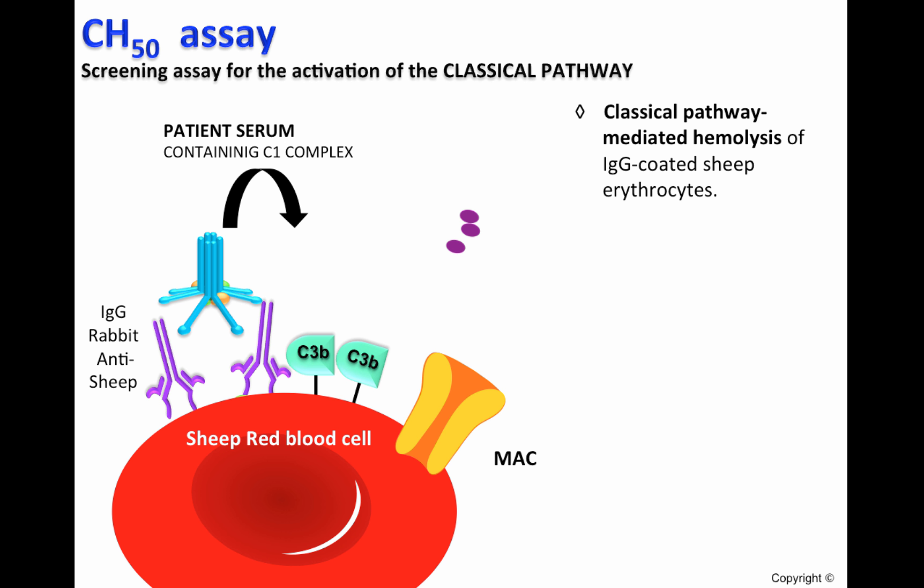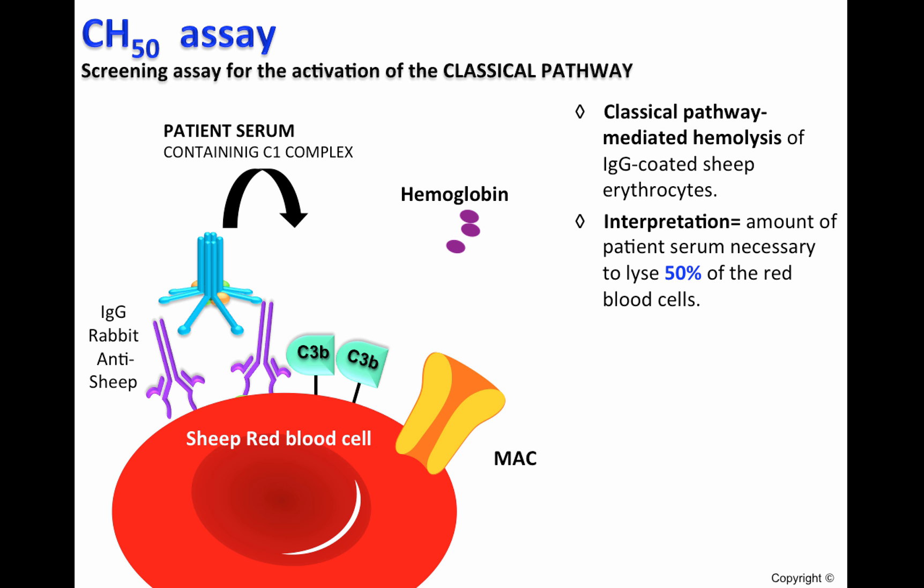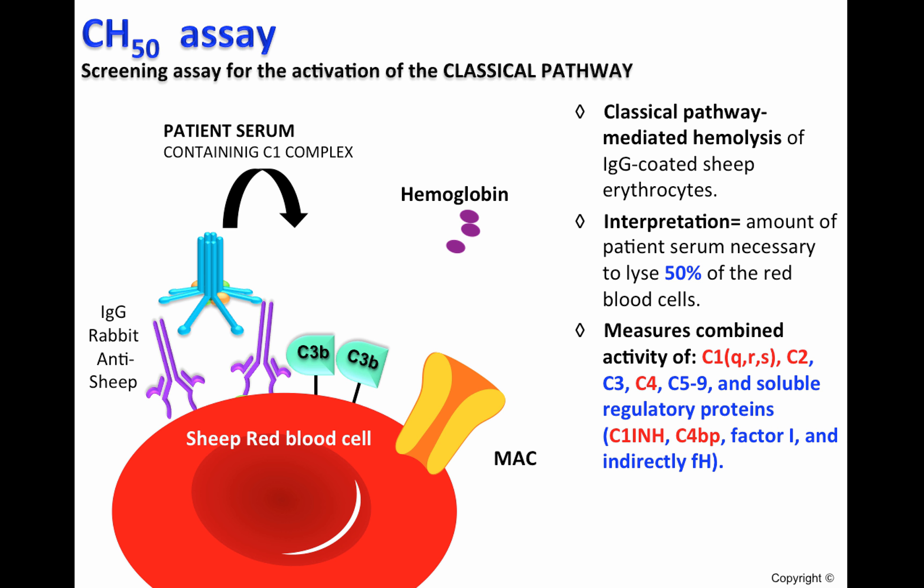Hemolysis of red blood cells is measured by determining the release of hemoglobin into the supernatant. CH50 is the amount of patient serum needed to lyse 50% of the red blood cells. The CH50 is sensitive to the reduction, absence, and/or inactivity of any component of the pathway.